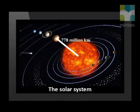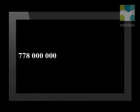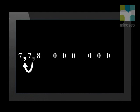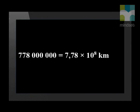Let's first look at a very big number. What is the distance of Jupiter from the Sun? Jupiter is approximately 778 million kilometers from the Sun. To write this number in scientific notation, we count from the last zero and move the decimal place so that we write an integer between 0 and 10. We move 8 places. We say this number as 7.78 times 10 to the power 8. The exponent is positive and this tells us that this is a very large number.